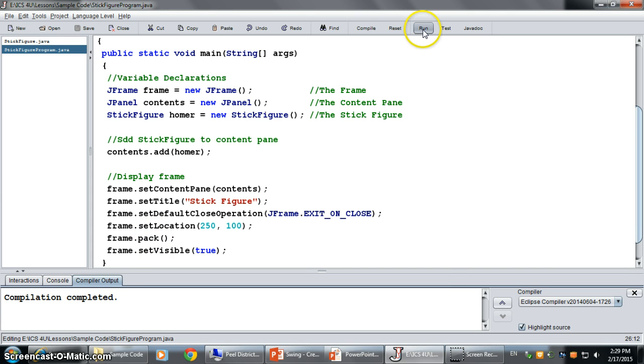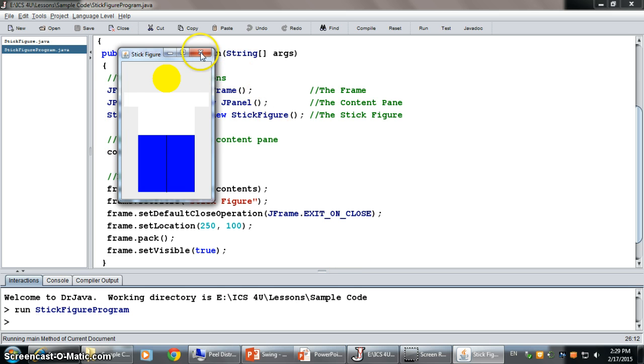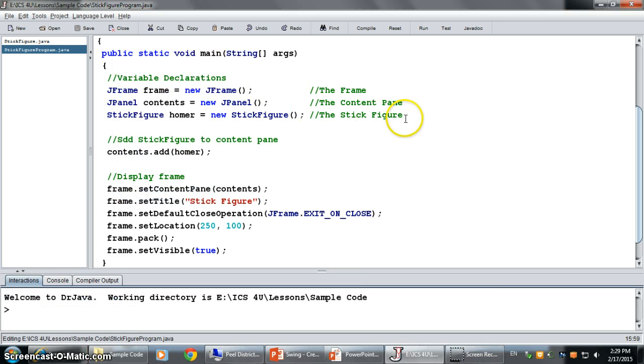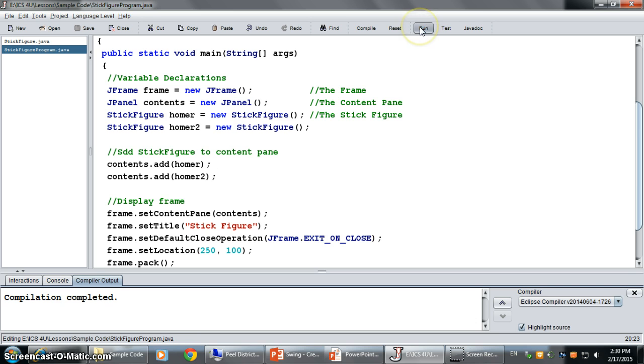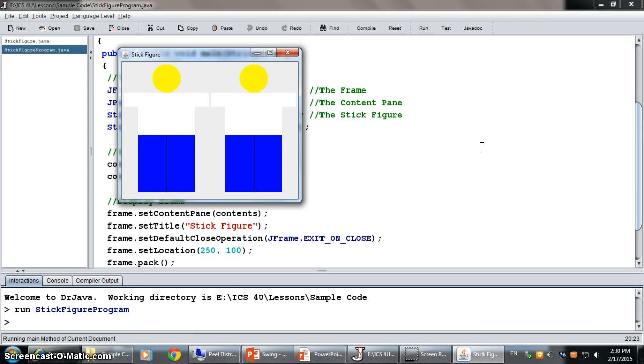And when we compile this and run it. There's my Homer that I've created. And again you can see this is a component. Because I can just quickly and easily make another stick figure. I can make as many as I want. But I can make another stick figure. We'll call him Homer 2. And it's a new stick figure. And then all I need to do in my contents pane here. Is add my second Homer in there. Compile it. And you can see we now have two homers side by side of each other. And I can keep adding as many homers as I want. Just like I can add as many buttons, as many J panels, as many J text areas. Whatever it is that I want to put on my screen.